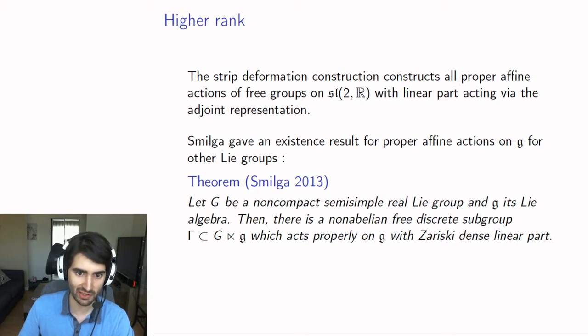Ilias Smilga has a result in this direction—an existence result for proper affine actions. For any real Lie group, non-compact and semi-simple, if you look at the Lie algebra and the action described before, you can find a non-abelian free discrete subgroup of the affine group that acts properly on the Lie algebra.